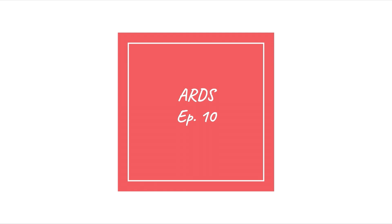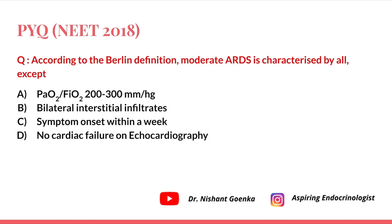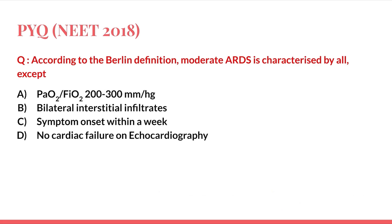Welcome to episode 10 of the medicine PYQ topic series. The topic is ARDS. The PYQ from NEET 2018 goes: according to the Berlin definition, moderate ARDS is characterized by all except. The options are: PaO2/FiO2 ratio 200 to 300 mmHg, bilateral interstitial infiltrates, symptom onset within a week, and no cardiac failure on echocardiography. Let's go to the topic first and then answer the question.